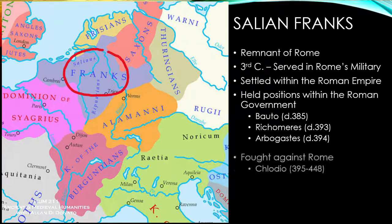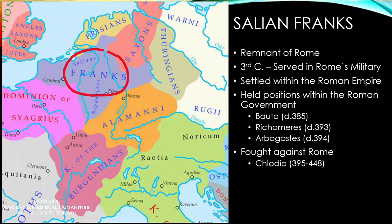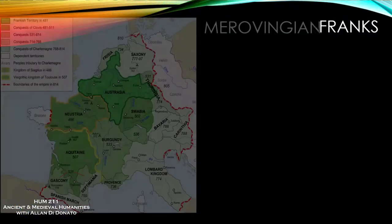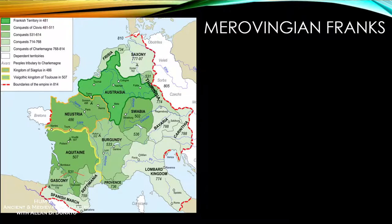These were Romanized Franks, but not all Franks were like that — some actually fought against Rome. An example would be a figure like Chlodio, probably around 395 to 448, who attacked Roman territory and was defeated by the Roman general Flavius Aetius. So you've got a mix: Franks that were pro-Roman and Franks that were anti-Roman. But for the most part, the Franks would become the Germanic group that best preserved Roman culture moving forward.